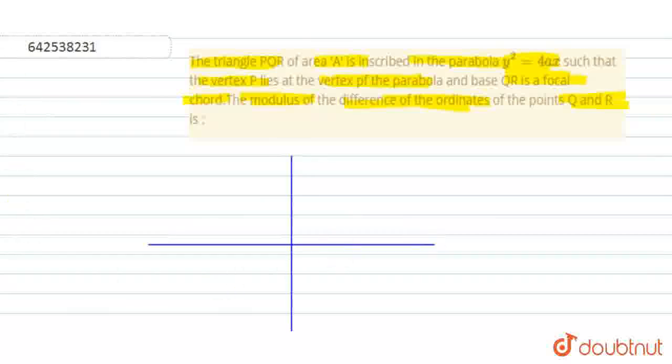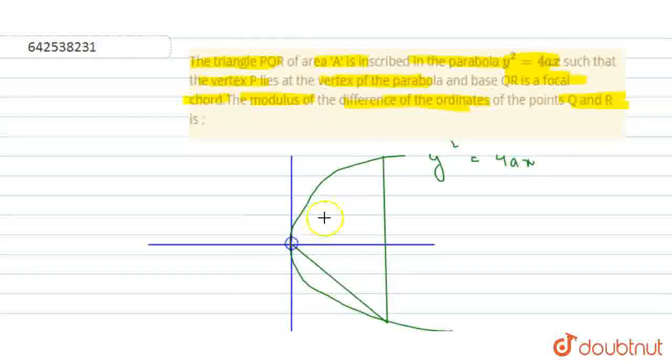In this graph, this is a parabola. The equation becomes y² equals 4ax. In this parabola, one triangle is inscribed and the triangle name is PQR. We can say this is O and this will be the focal chord at point A, 0.